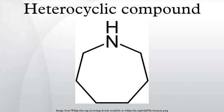Six-membered rings: six-membered rings with a single heteroatom, with two heteroatoms, with three heteroatoms, and with four heteroatoms are all established classes. The hypothetical compound with six nitrogen heteroatoms would be hexazine.